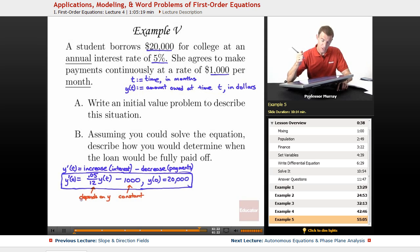So the second part of the problem here says, Assuming you could solve the equation, describe how you would determine when the loan would be fully paid off. So that was our answer to part A right there. For part B, what you would do is you would solve... Well, we want to figure out when the loan will be fully paid off. So we want to figure out when she owes $0.